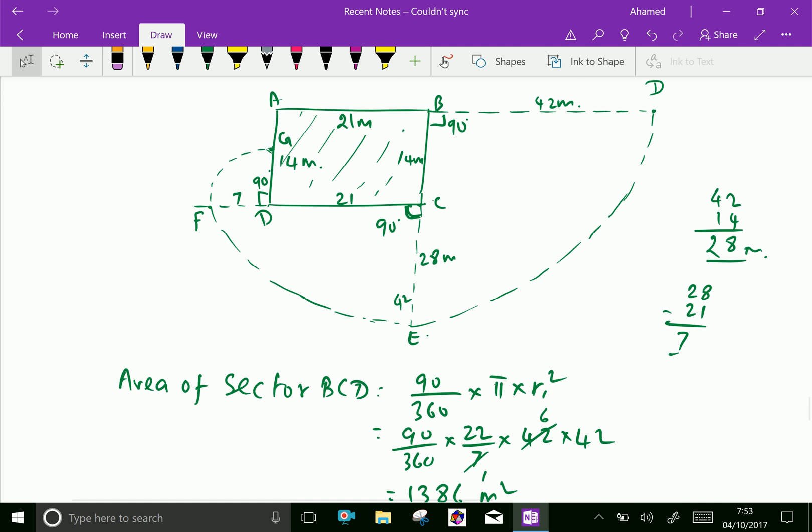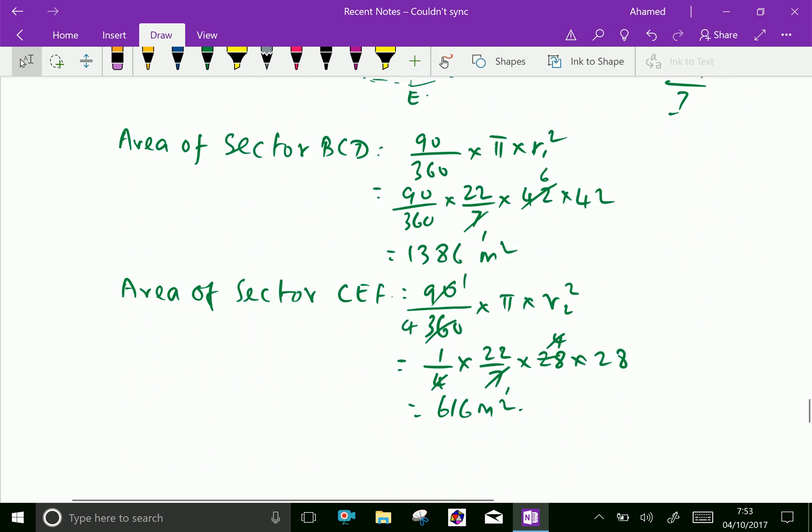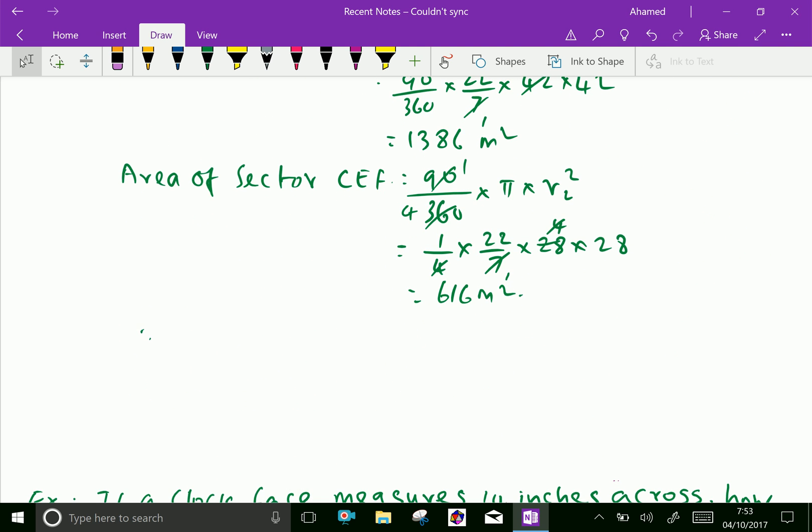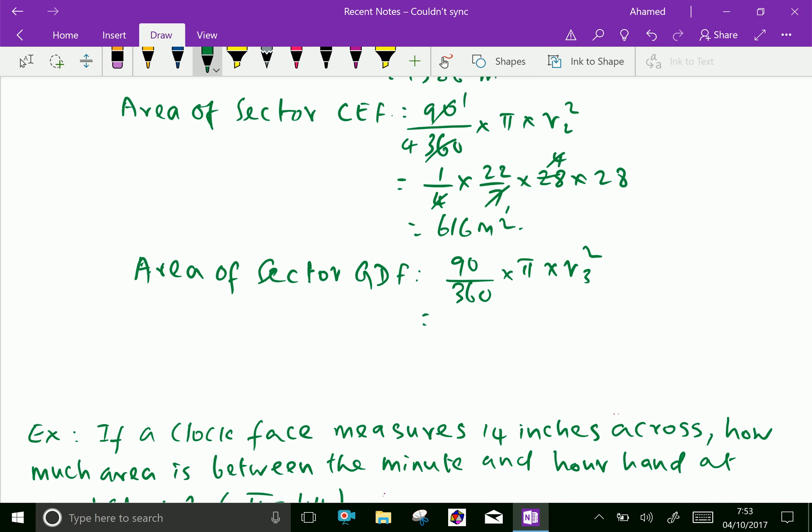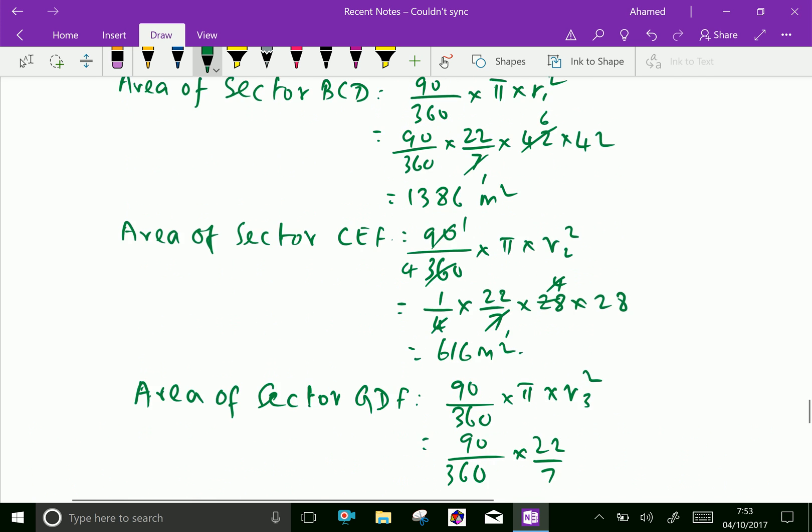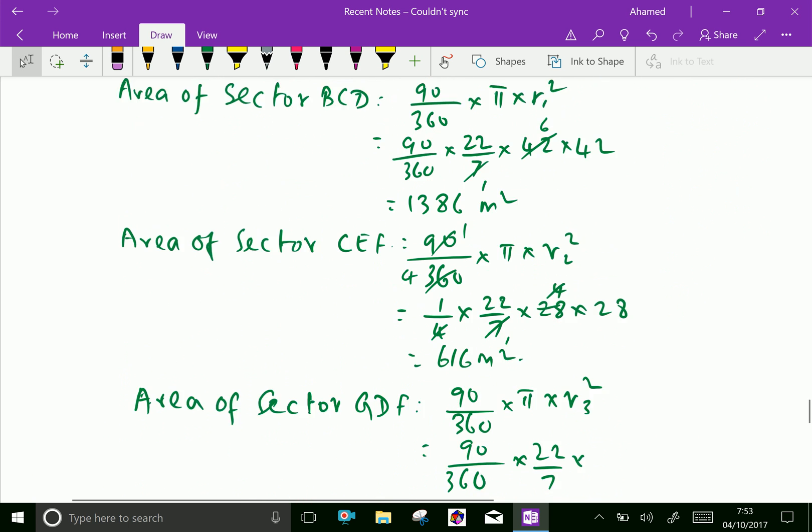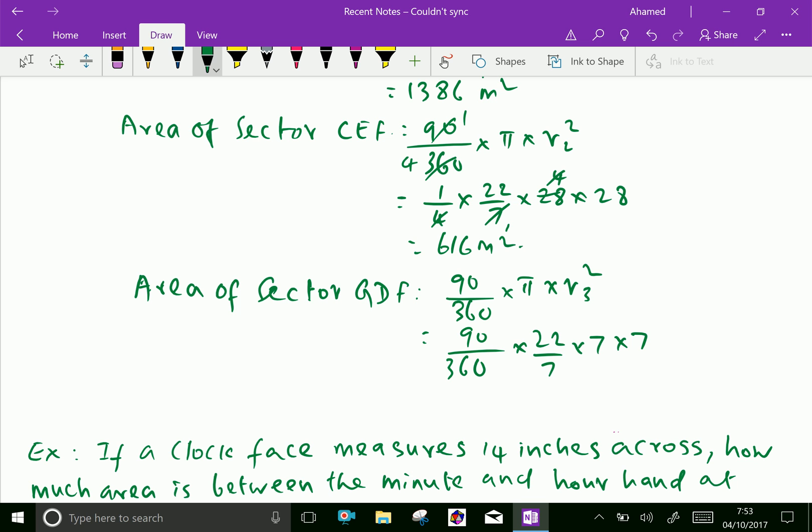Now, the third sector area, that is GDF. Area of sector GDF equal, here also quarter circle, that is 90 by 360 into pi R3 squared. We can get 90 over 360 into 22 by 7 into R3. Here, R3 is FD, that is 7 into 7. We will cut as 1 and 4, cut 1, 7 is cut.